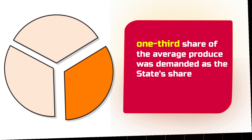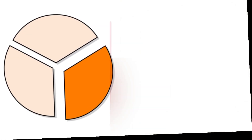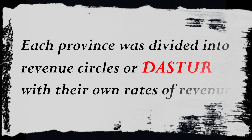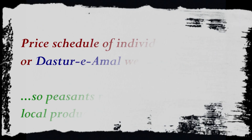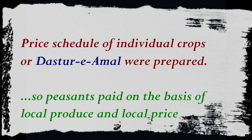The tax was fixed on each crop in cash. Since the types and production of crops varied across areas, each province was divided into revenue circles or Stoor, with their own rates of revenue. A price schedule of individual crops, known as Dasture Amal, was also prepared.